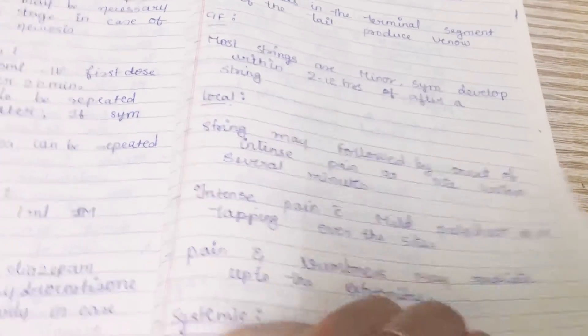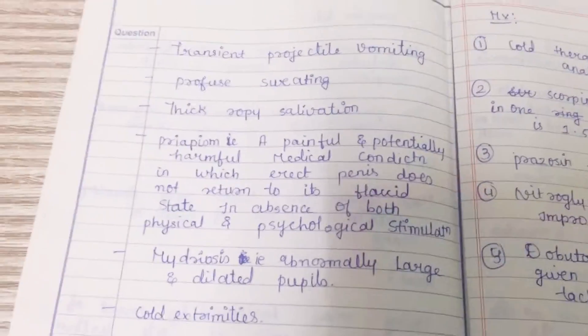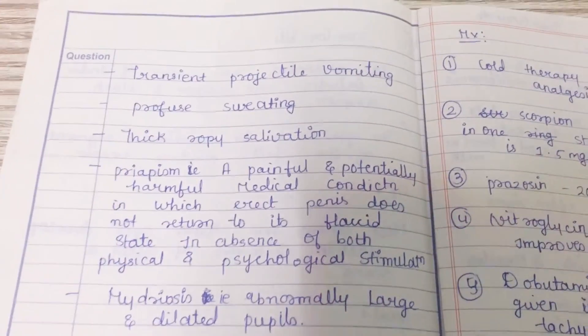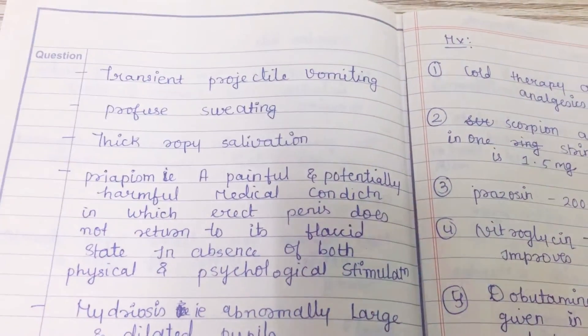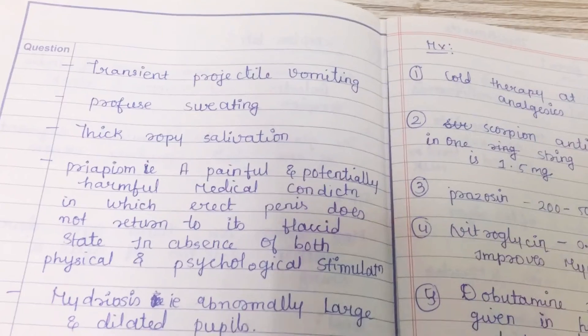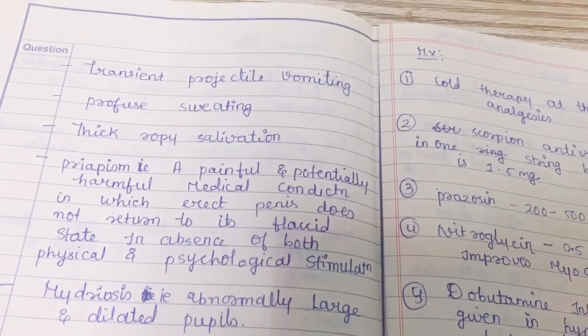What will be the systemic manifestations? The systemic manifestation will be transient projectile vomiting. As soon as the scorpion bite occurs, there will be projectile vomiting.